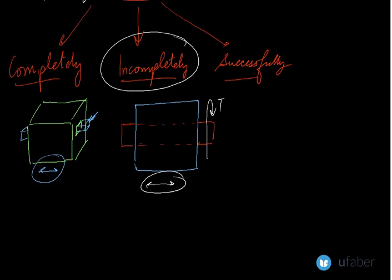Now successfully means you already have an incompletely constrained motion, but you make it a completely constrained motion by some external means. For example, let us take a very common example of a footstep bearing.